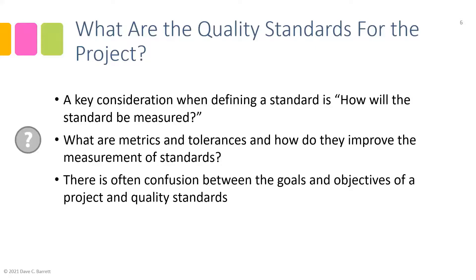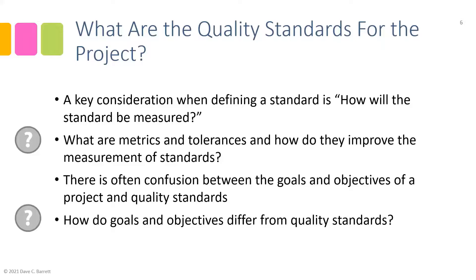There is often confusion between the goals and objectives of a project and quality standards. People new to quality will sometimes repeat the goals and objectives from the project charter when asked to define quality standards. The difference is that goals and objectives are the end result — the end game of what you're trying to achieve. Quality standards are how you're going to get there — the measurement of deliverables, products, and processes, defining their characteristics in order to achieve the goals and objectives.